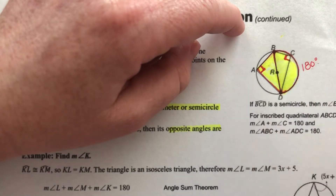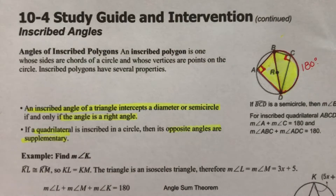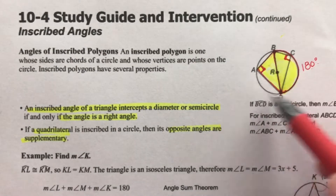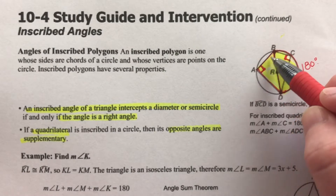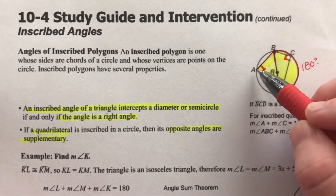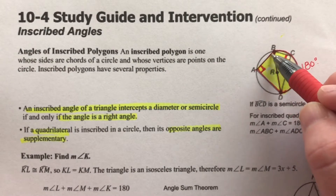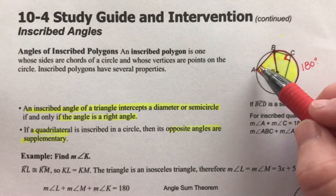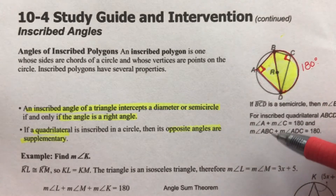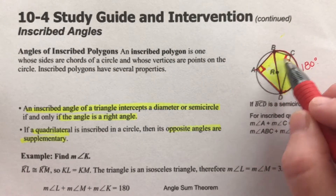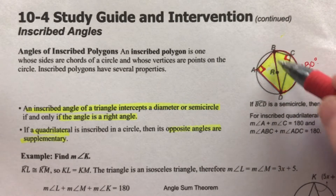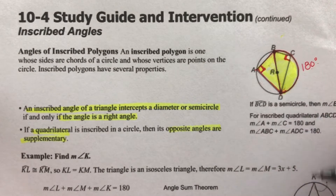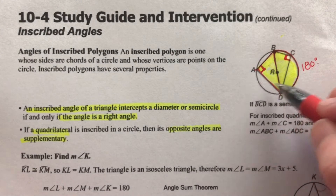The inscribed angle is half the intercepted arc. For quadrilaterals inscribed in a circle, the vertex lays on the circle — the point where two lines meet falls right on the circle. An inscribed quadrilateral has opposite angles that are supplementary. Just like two opposite angles that are each 90 degrees add up to 180, the other pair of opposite angles also has to add up to 180, because the interior of a quadrilateral adds up to 360.